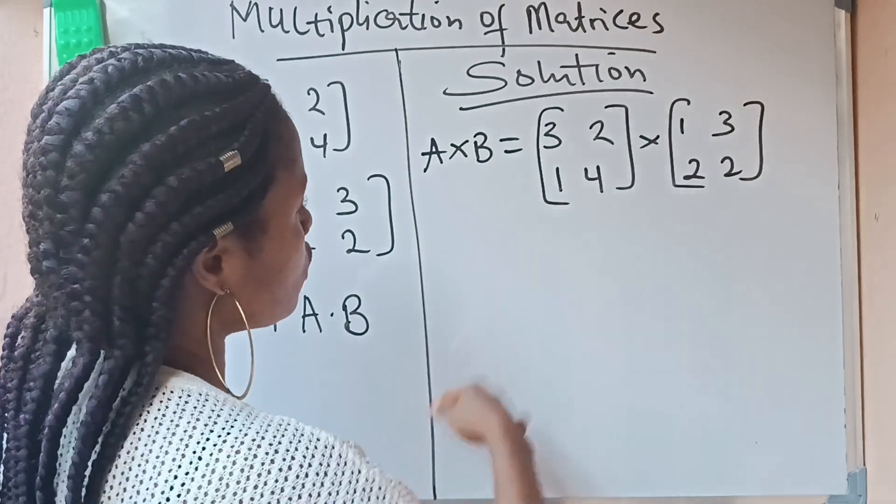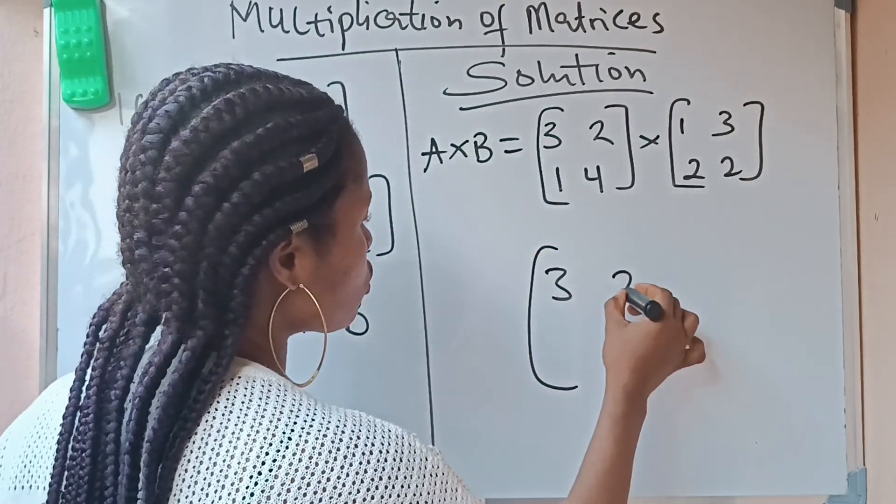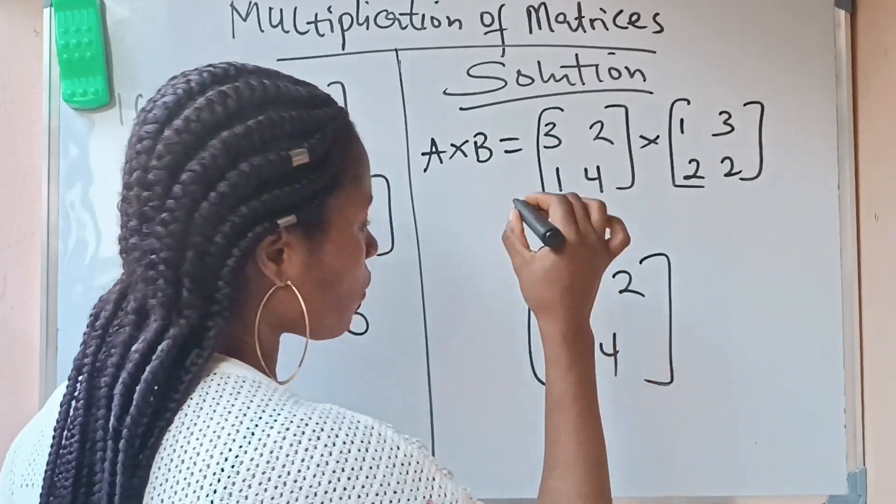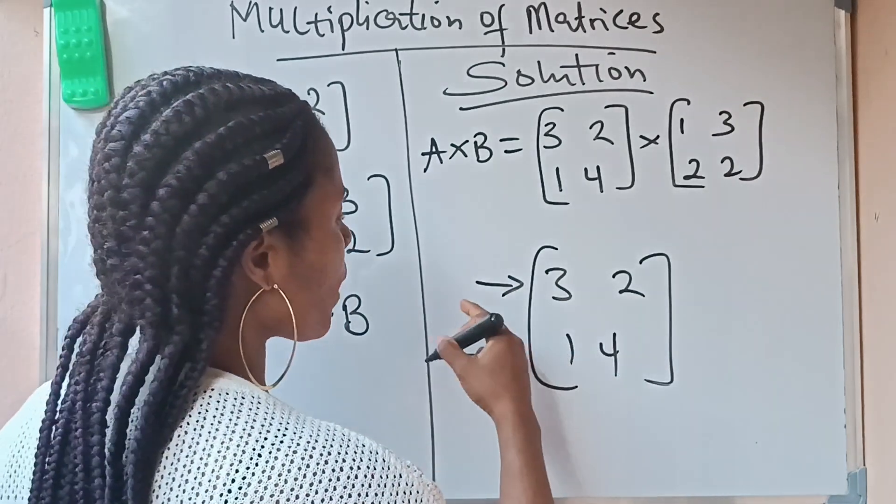For example, 3, 2 and 1, 4. Now what is the row? The row means the horizontal ones, those ones in the horizontal. So we have two rows here: this first one and this second one.